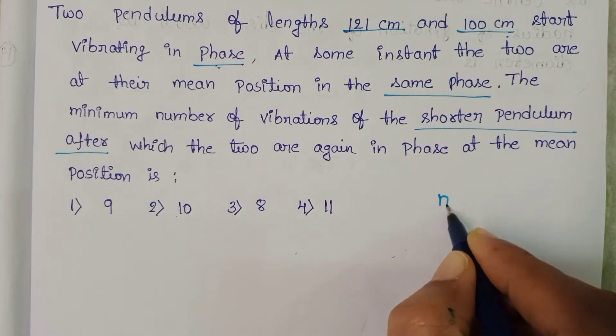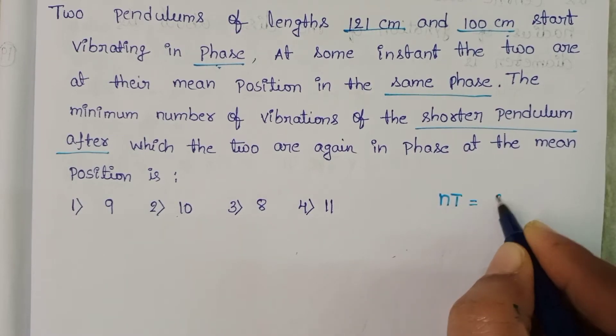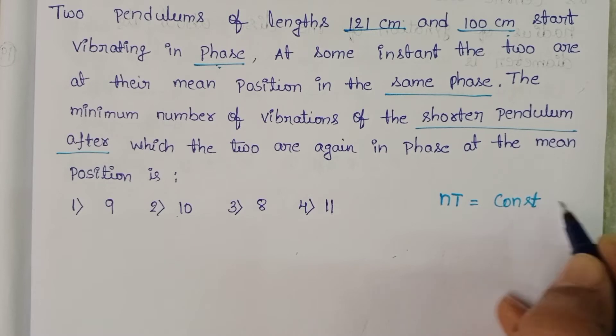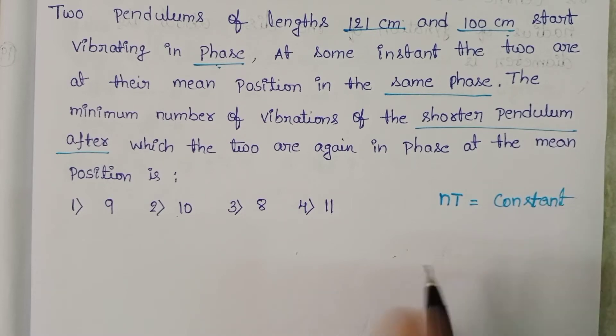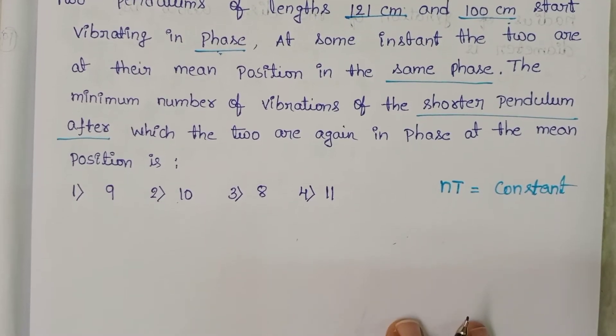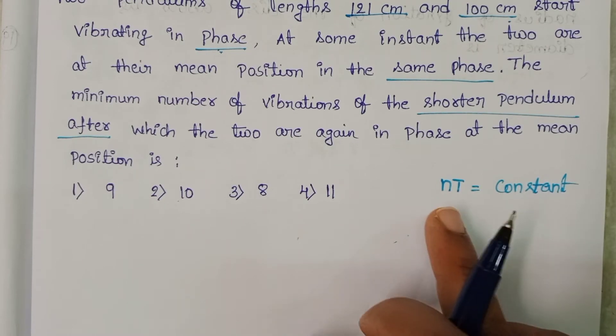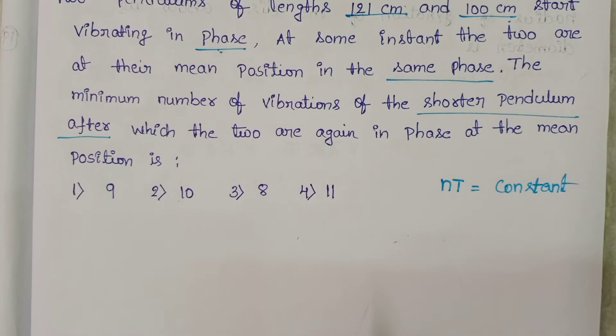The product of frequency and time period is equals to constant. We know frequency and time period these two are inversely proportional. But whenever the two pendulums are in same phase, then their product of frequency and time period is equals to constant.